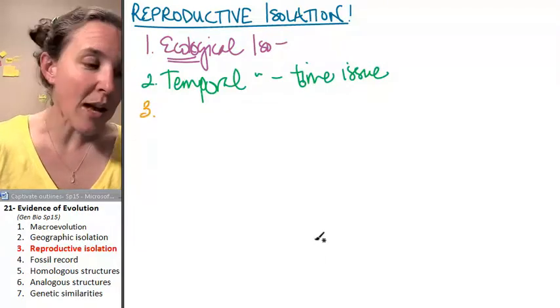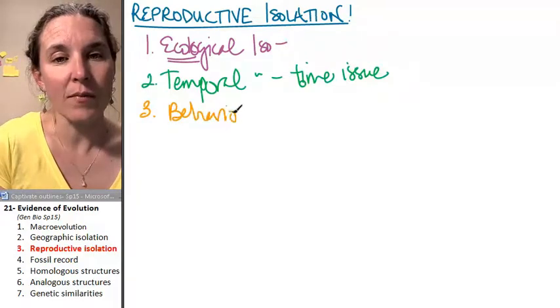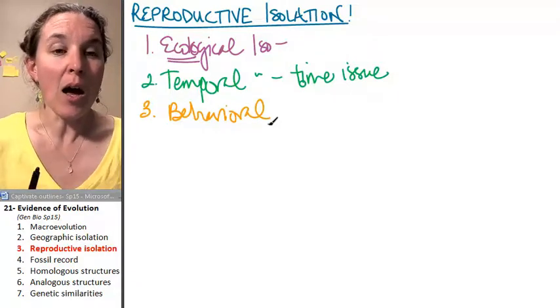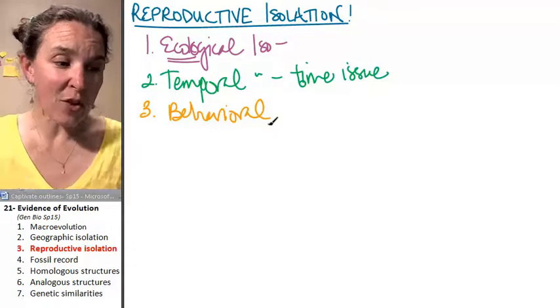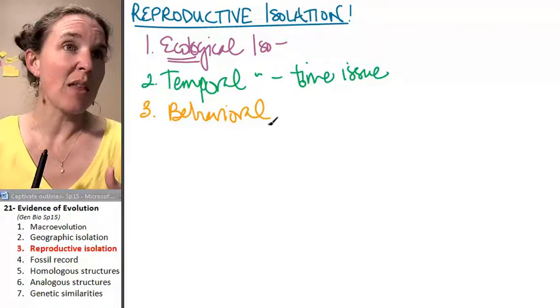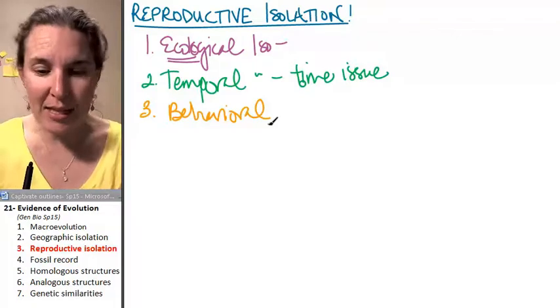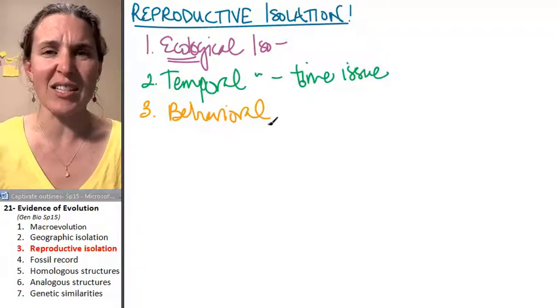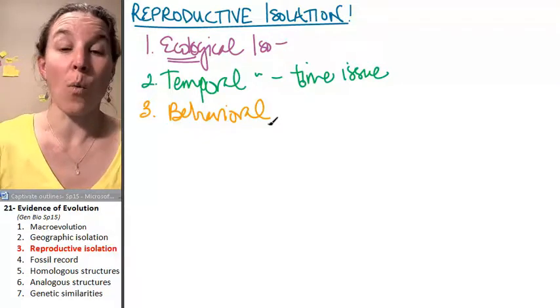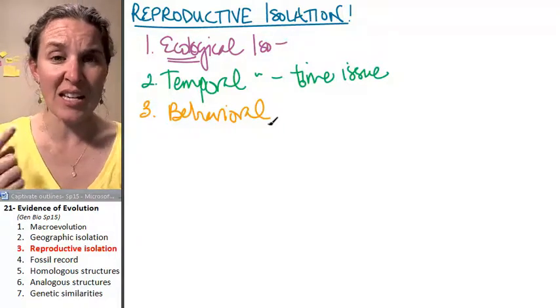All right, another form would be behavioral. Behavioral isolation would be something like the grasshopper behavior, like their song that they sing, their flashiness, their little dance that they do, or even just the way that they sit and chill in front of the TV on the couch. Whatever it is, there is a behavioral thing that is not compatible.